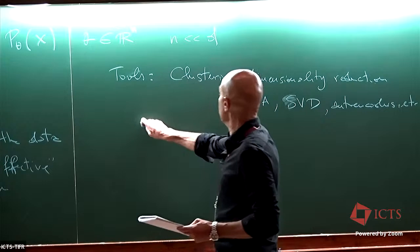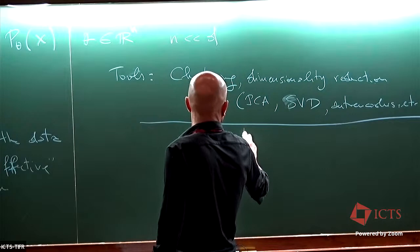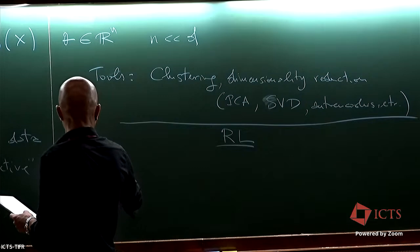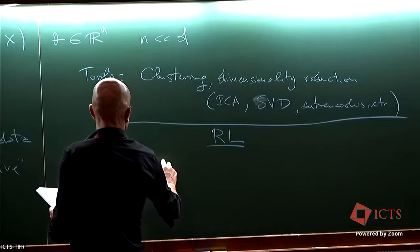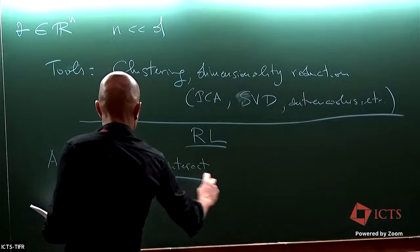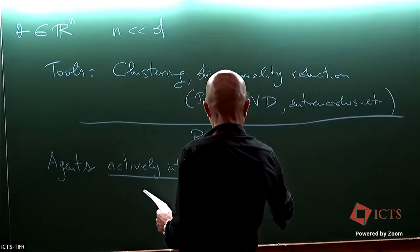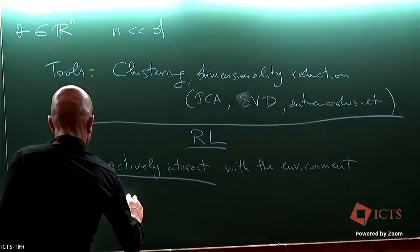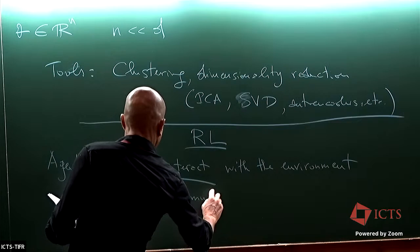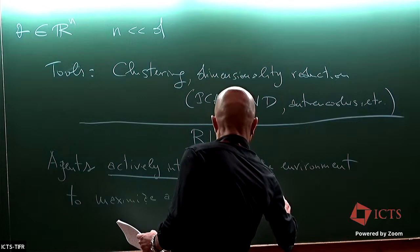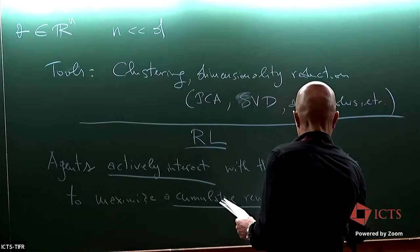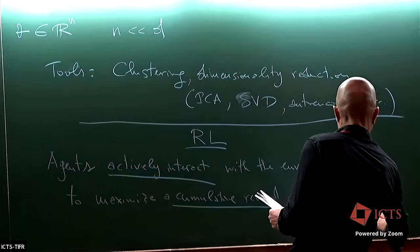Reinforcement learning is something else — it's a third paradigm. What reinforcement learning is: you have agents that actively interact with the environment, and what they want to do is maximize a cumulative reward or minimize a cumulative cost, by taking actions and controlling the system.